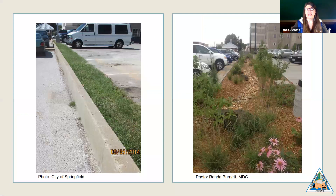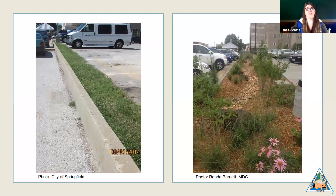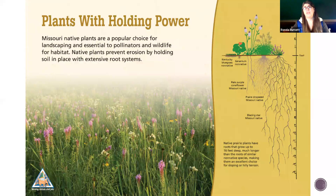Another rainwater management project is featured in this before and after at Government Plaza in Springfield. As the parking lot was renovated, they took out the very narrow strip of turf grass that was essentially an ecological desert and replaced it with a large bioswale full of native plants that filter pollutants from parking lot runoff and provide other benefits. Another ecosystem service involves the prevention of soil erosion; prairie plants are highly regarded for this because of their well-developed extensive root systems.